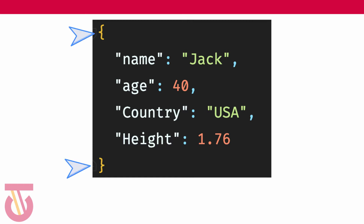The data between curly braces belongs to an object. So this whole example represents an object with fields: name, age, country, and height. The keys and values are separated by commas. This is simple to read, but now we are going to go to Java and convert Java objects to JSON.